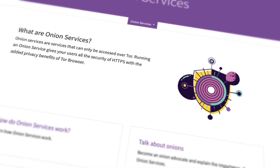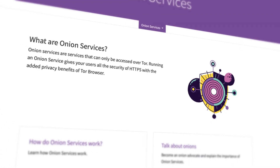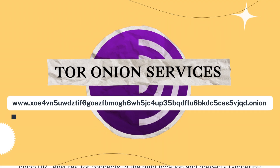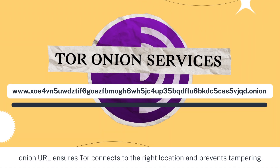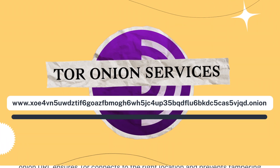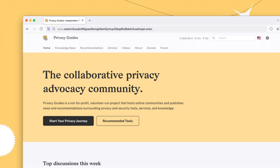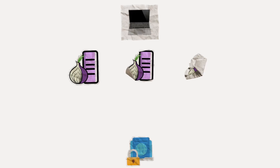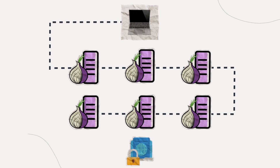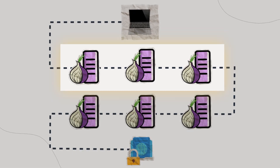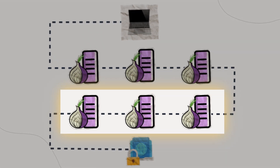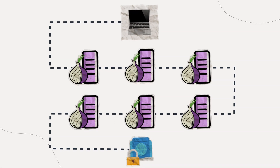Tor also has websites that you can only access with the Tor browser. These are called onion services — websites with a long, randomly generated address that ends with .onion. Tor onion services work like regular websites through Tor, but your connection goes through six relays before reaching the website. The first three protect your anonymity, and the next three protect the anonymity of the person hosting the Tor onion service.